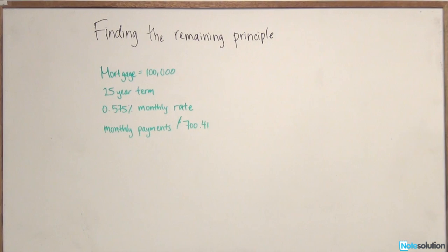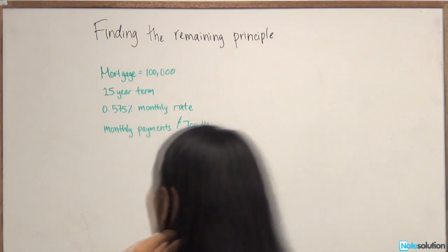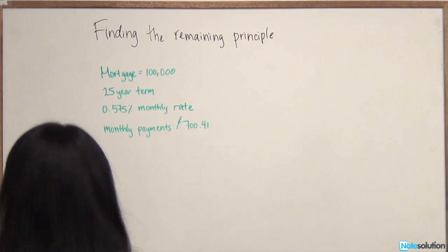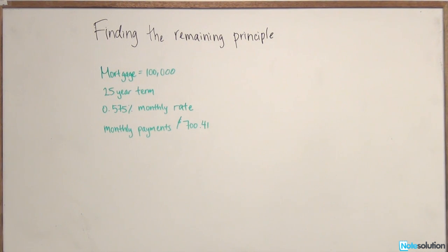So quite an easy calculation. We're going to use a financial calculator to solve this. All we need to do is recognize that the only difference between the beginning of the mortgage and now is the payments remaining over the life of the mortgage. So we still have 0.575% monthly rate, we still have the same payments, we have a smaller term which we also know, and what we need to find now is just the present value.